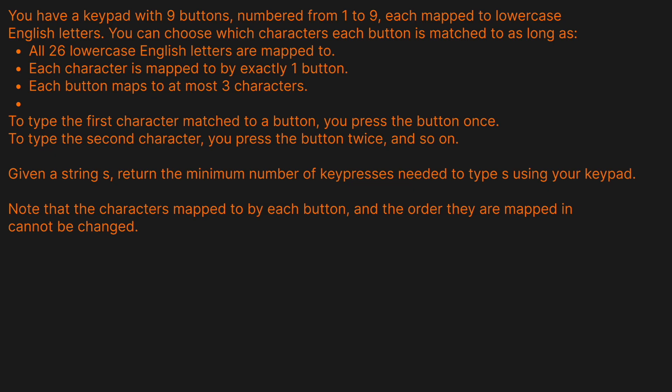You have a keypad with nine buttons numbered from one to nine, each mapped to lowercase English letters. You can choose which characters each button is matched to, as long as all 26 lowercase English letters are mapped, each character is mapped to at least one button, and each button maps to at most three characters. To type the first character mapped to a button you press it once, the second character requires pressing twice, and so on. Given a string s, return the minimum number of key presses needed to type s.